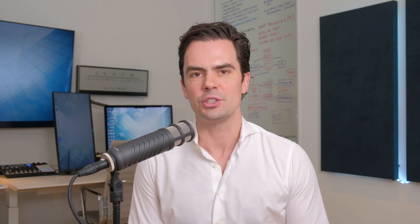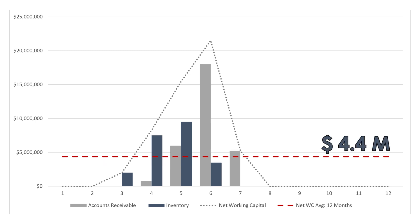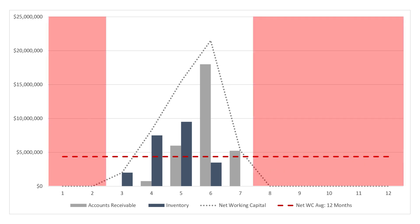A working capital adjustment with normalized working capital allows both parties to be indifferent as it relates to the timing of the transaction. So let's work towards normalizing working capital for this example, starting by looking at net working capital average for the last 12 months, which is the dotted red line in the chart. In this initial example, the chart shows a 12-month average net working capital of $4.4 million. The problem is that the average includes seven months of zero activity. As the net working capital peak of $21.5 million in June suggests, the $4.4 million target is not going to be sufficient to fund the purchase of inventory and accounts receivable required to generate a full year of sales.